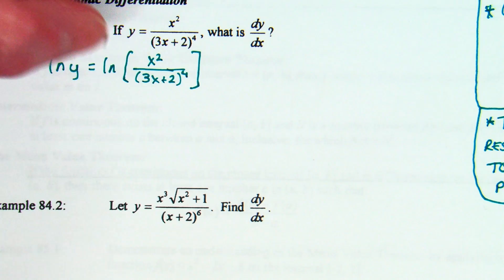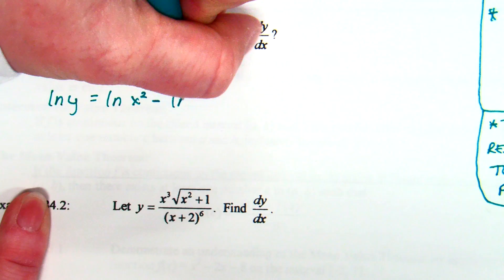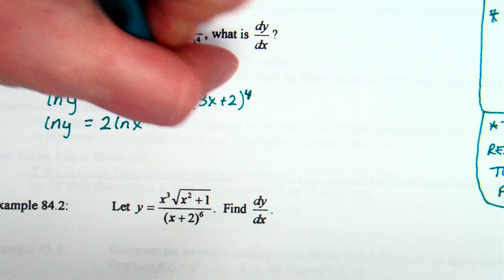So the left carries down: natural log of y equals the natural log of x squared minus the natural log of (3x + 2) raised to the fourth. Then we apply the power property of logs — if you have a number in the exponent, you can bring it out front as a coefficient. So: natural log of y equals 2 times natural log of x minus 4 times natural log of (3x + 2).